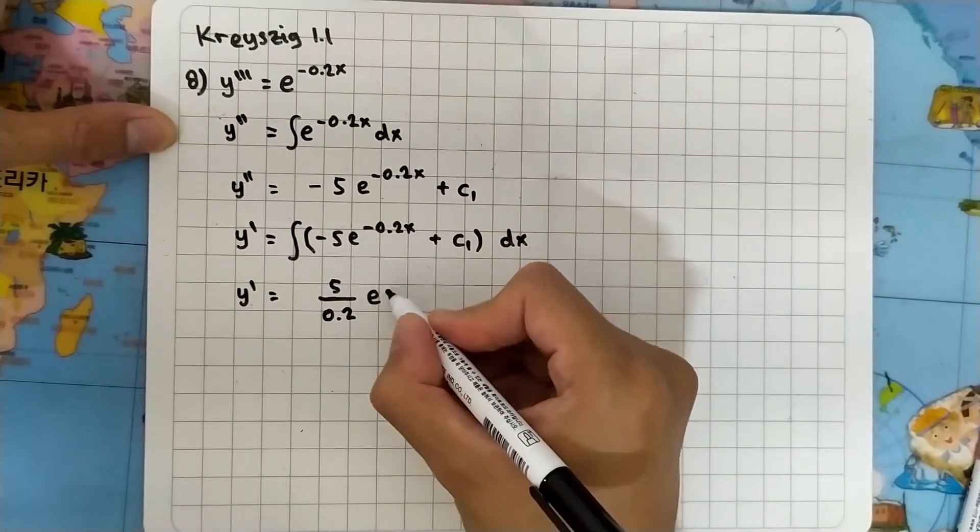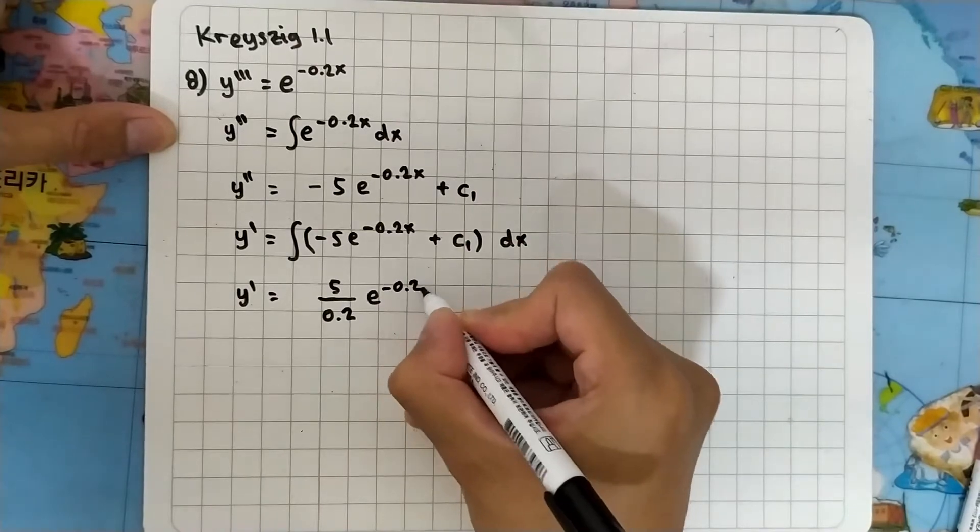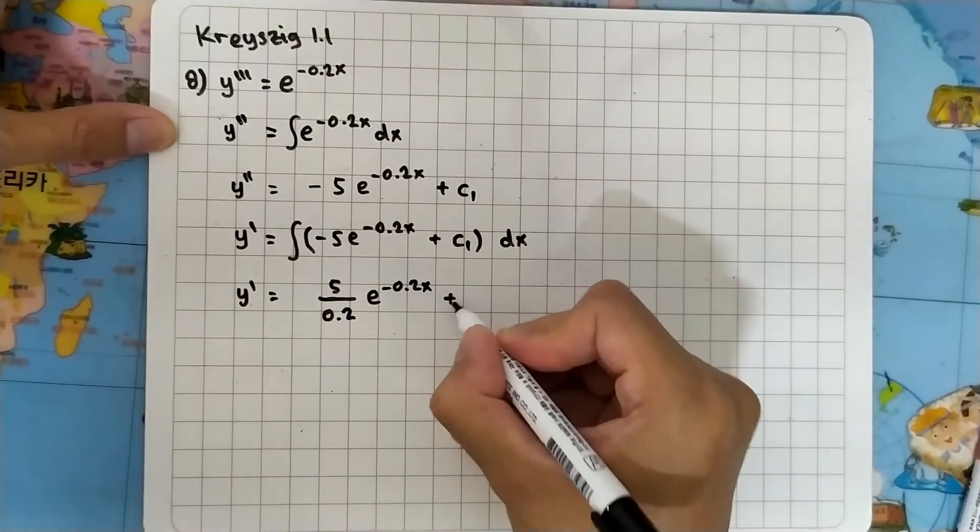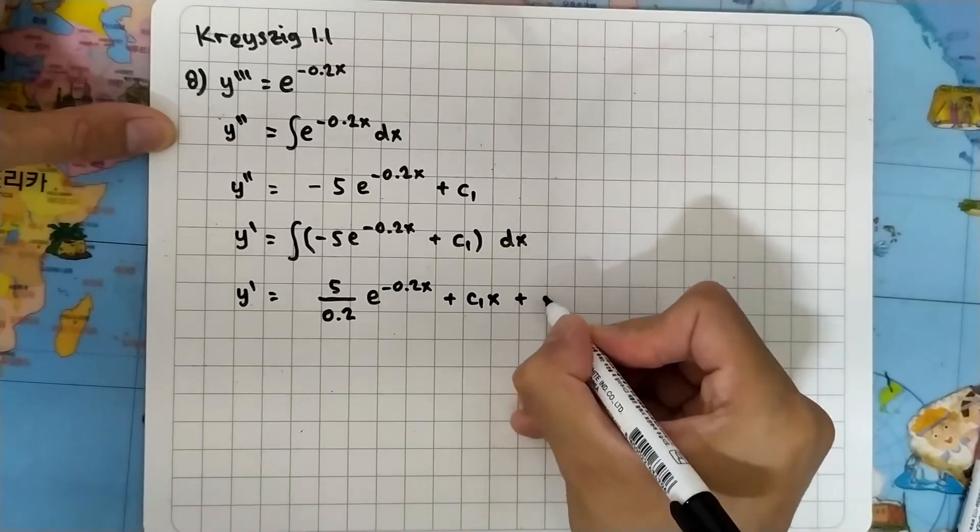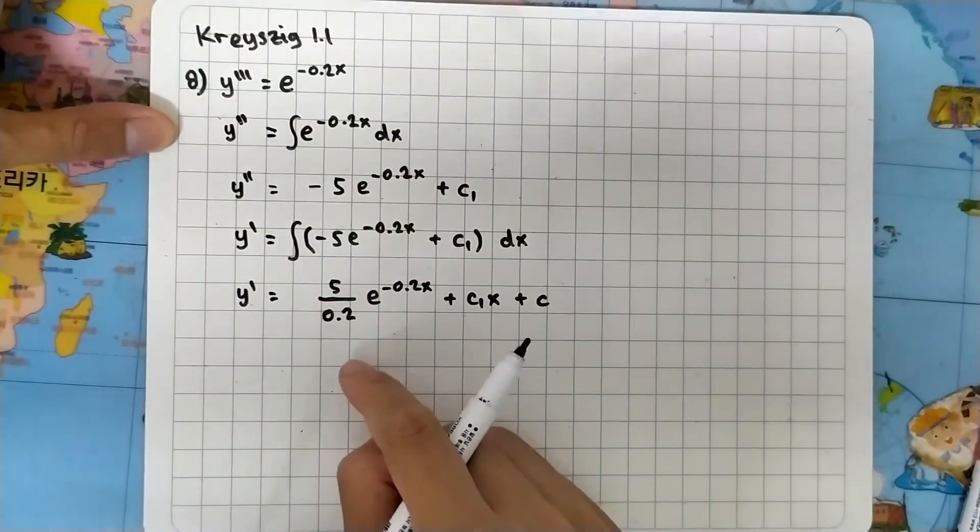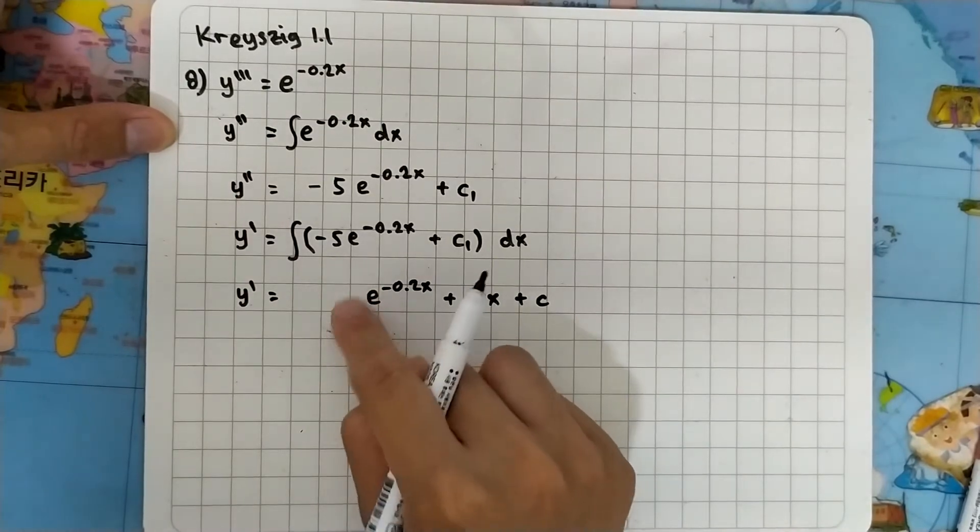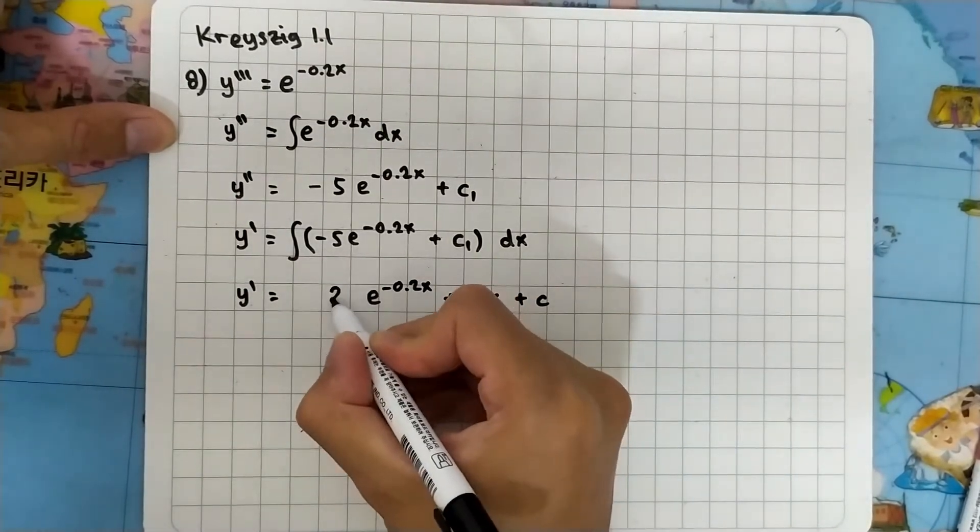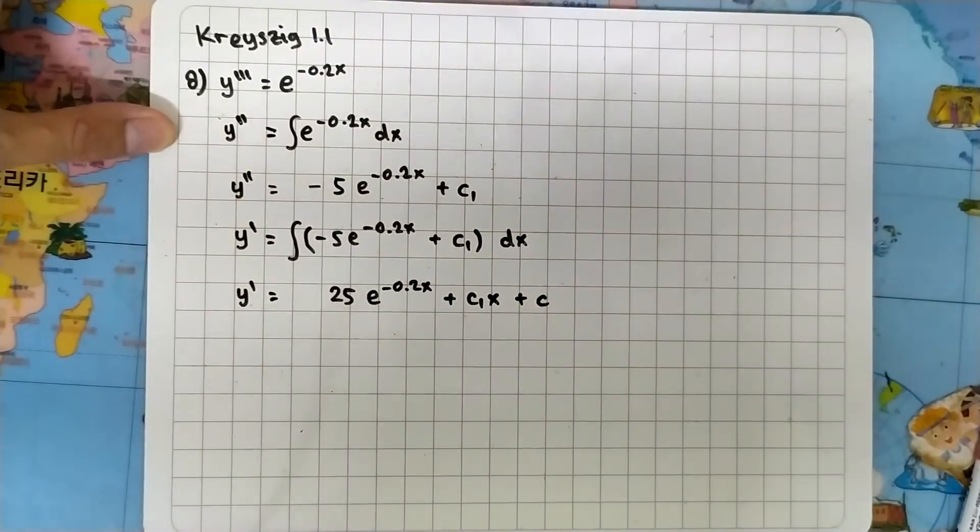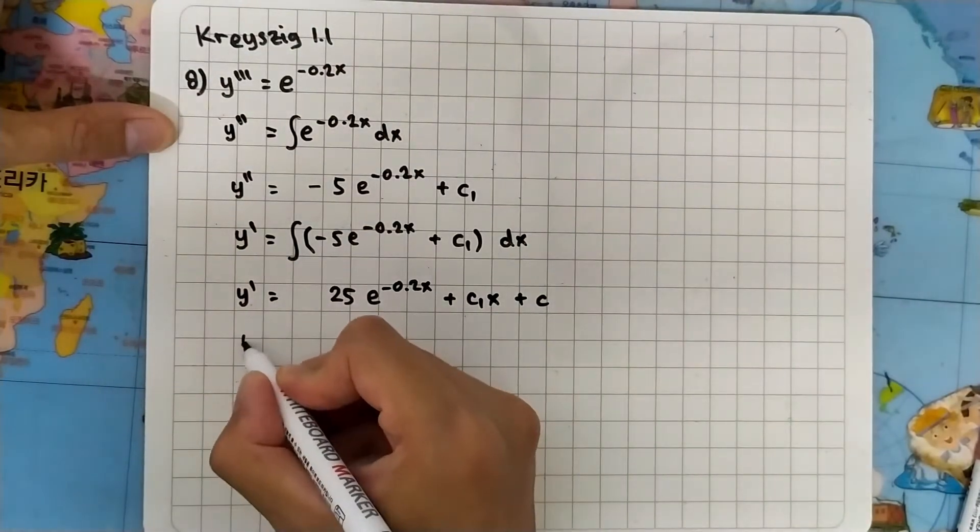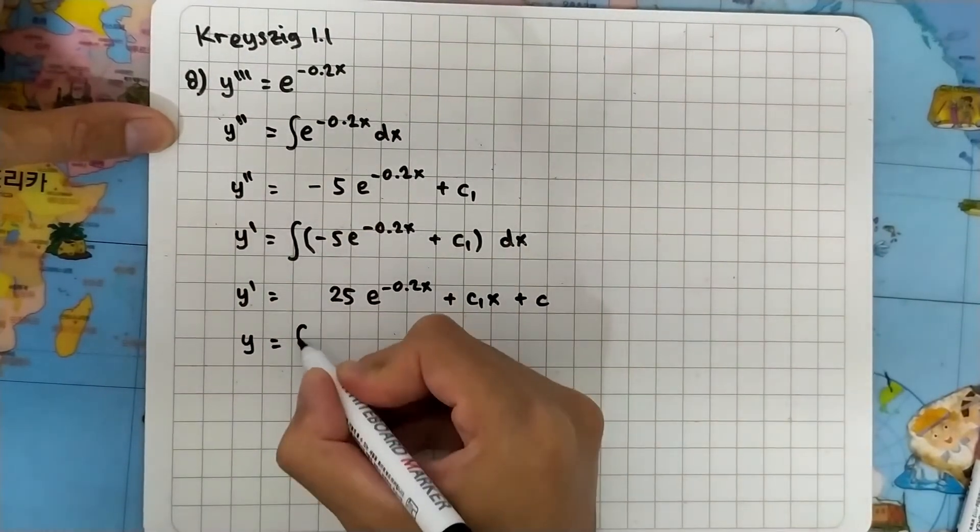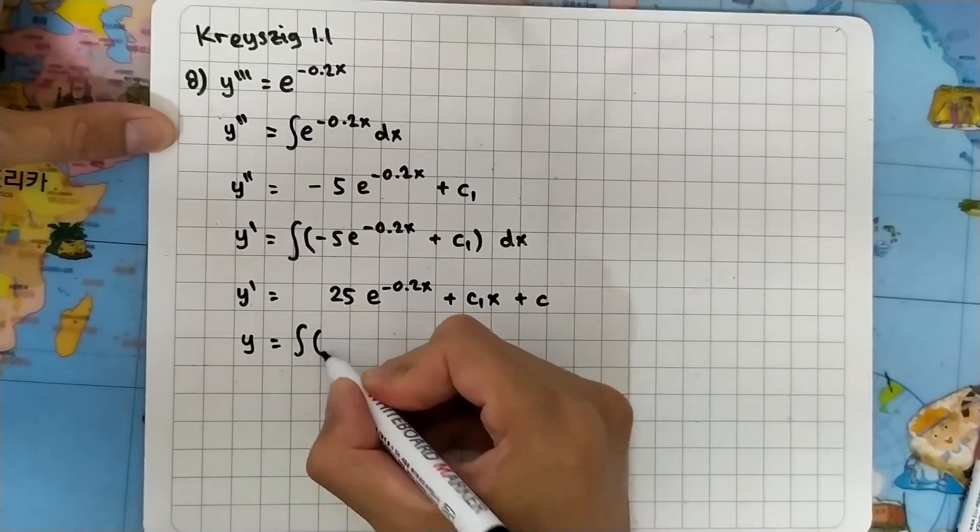Plus c1 x plus some constant c2. And 5 divided by 0.2 is 25, so we have 25 e to the minus 0.2x plus c1 x plus c2. And we need to integrate this one more, so we will have integral of this one.